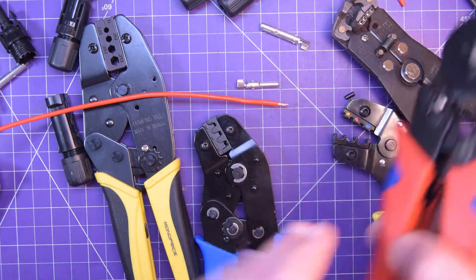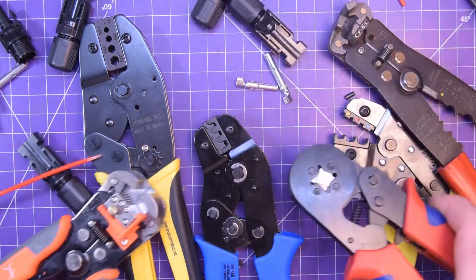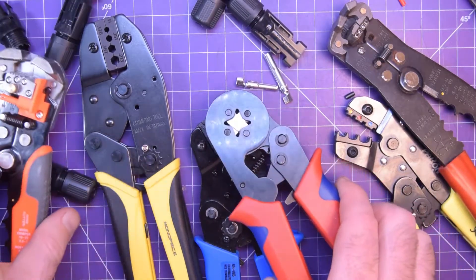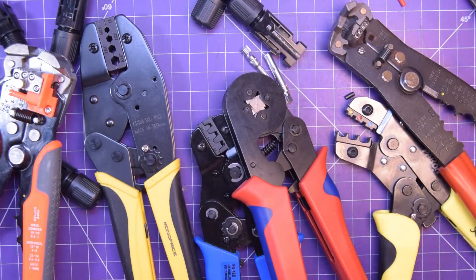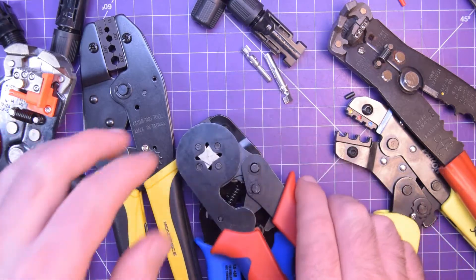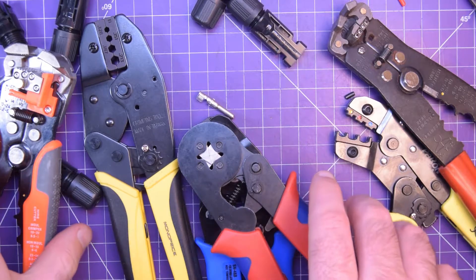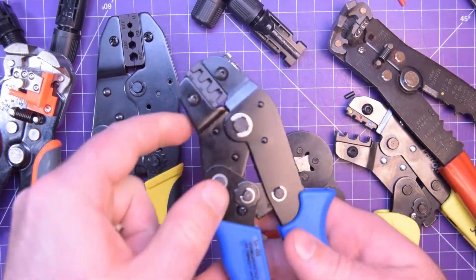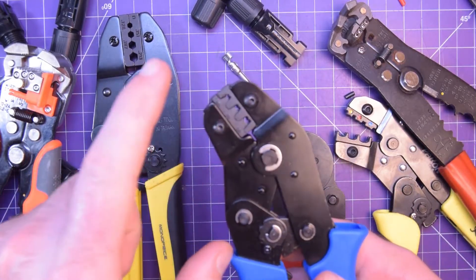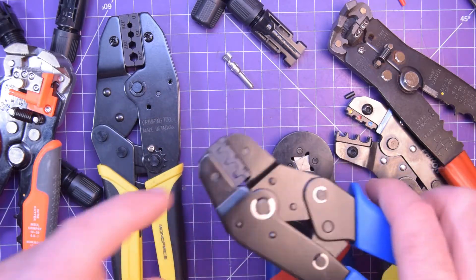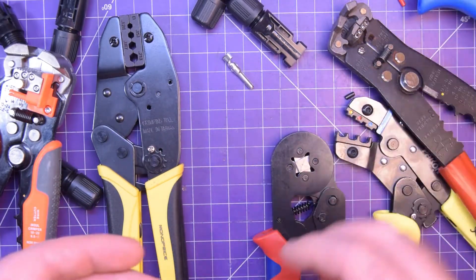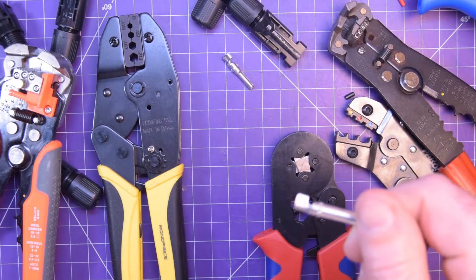Now, I have scoured my entire crimper collection and I do not have the proper crimper for MC4s. It's really just any non-insulated crimper that finishes in a B shape, sort of like this, but these are way too small for these connectors.